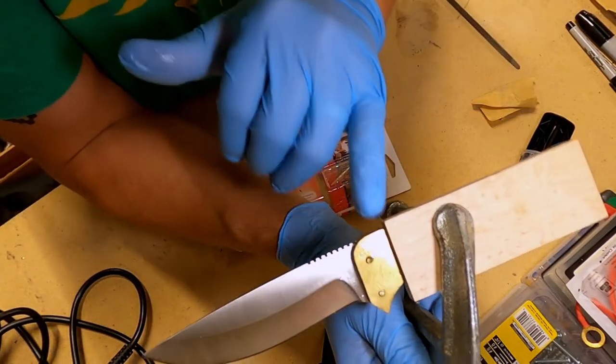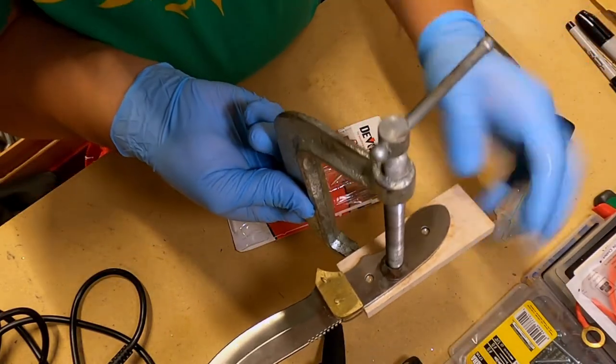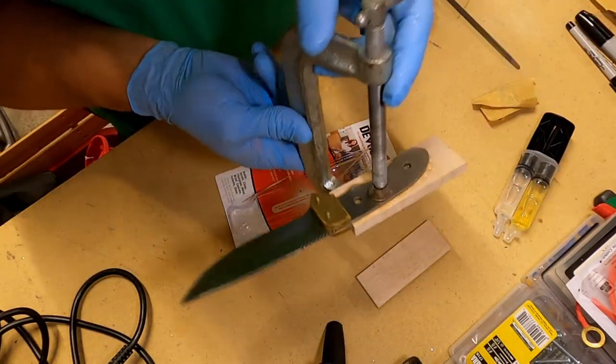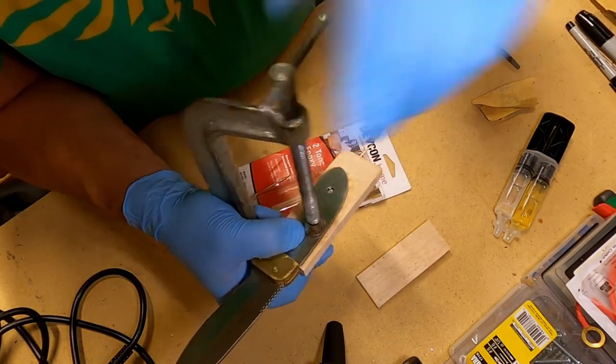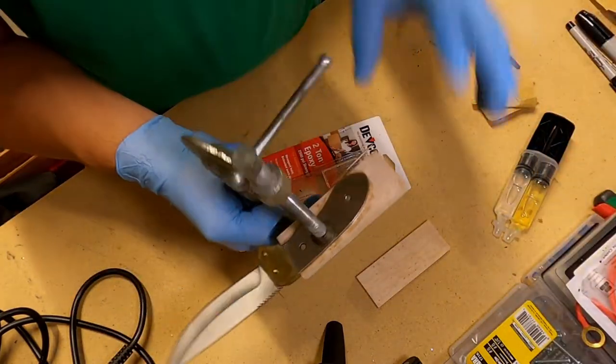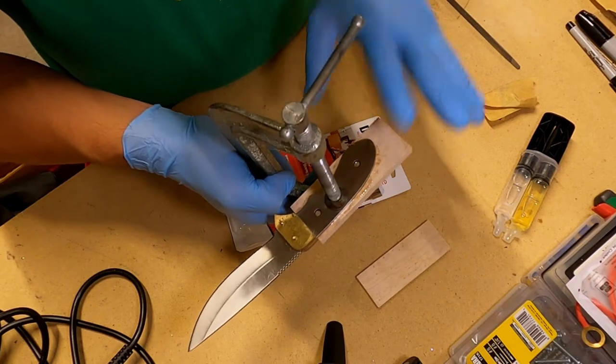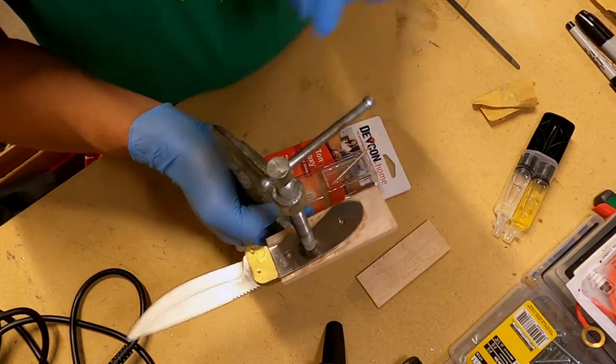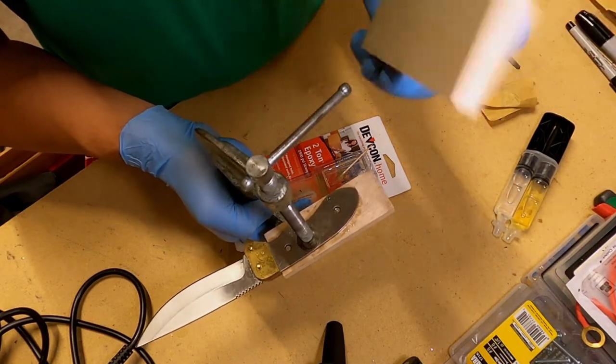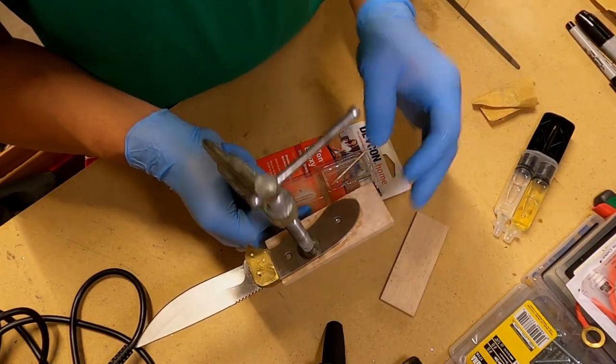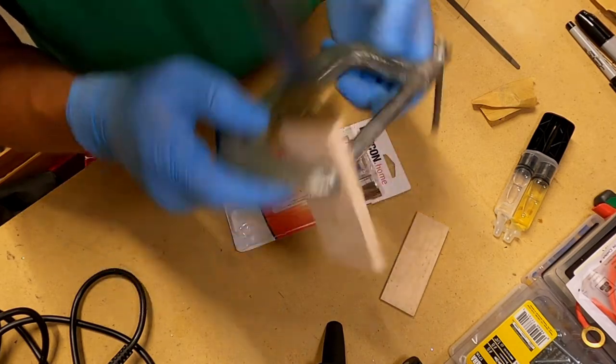And there we have it. So it's nice and flush here. We've got plenty on both sides to shape. And that'll be how we do it. Our cure time is about eight hours. We'll come back, drill holes for the pins, and then put the second part of the handle on so that we can begin shaping.